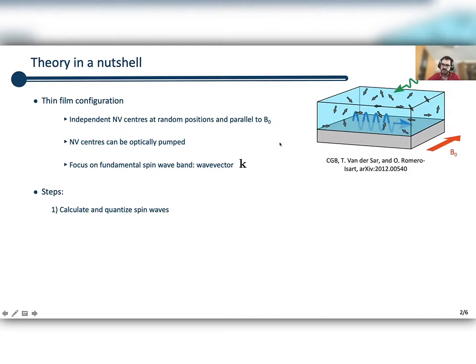We quantize this theory, and the reason we quantize and use a quantum formalism is basically because we're interested in having a formalism as general as possible so that it can be applied both to classical computing and hopefully in the future to quantum states of spin waves, such as for instance a single magnon.